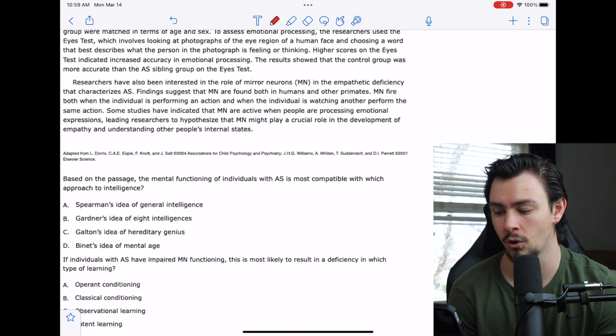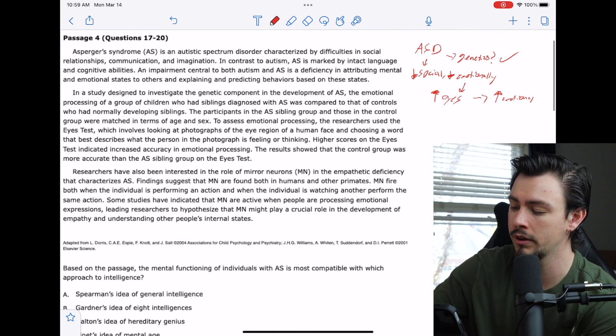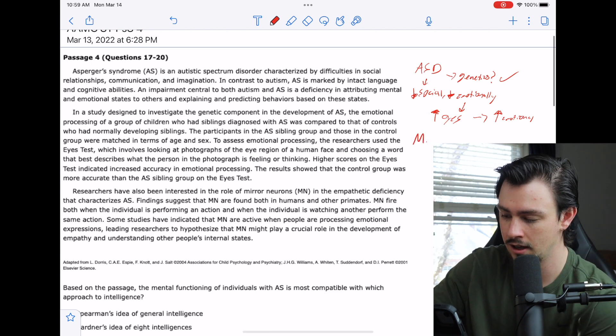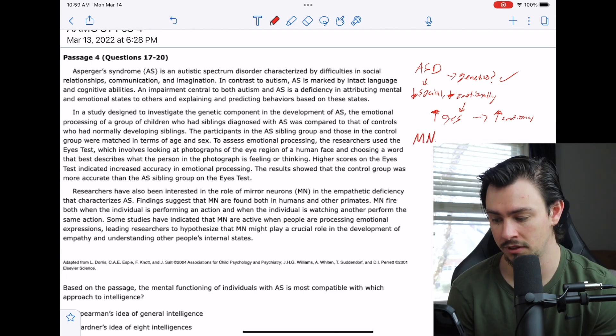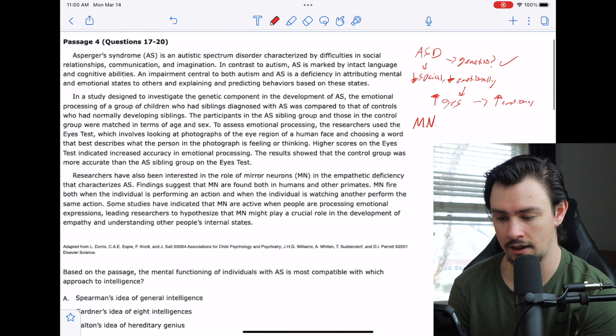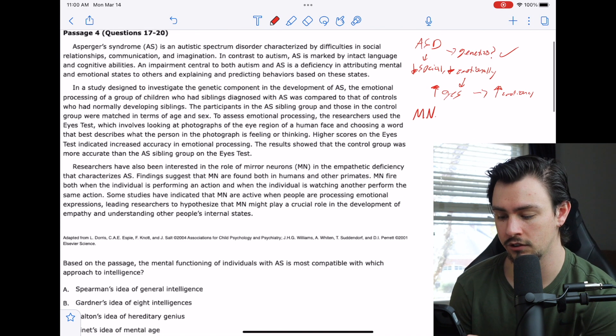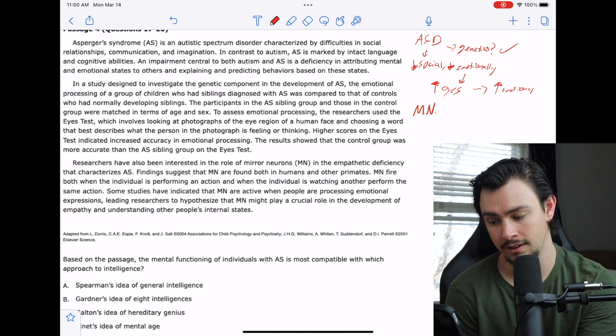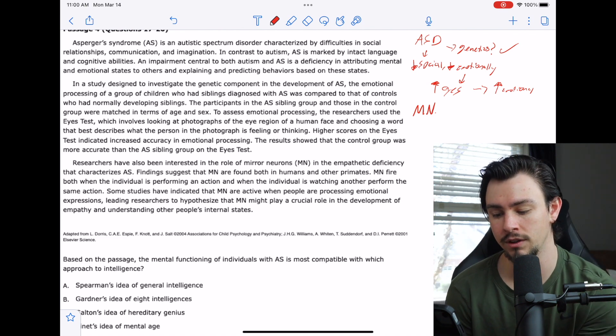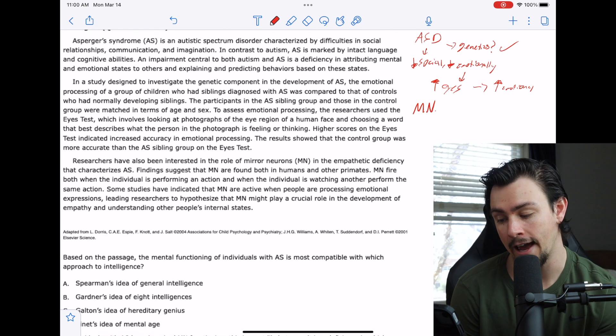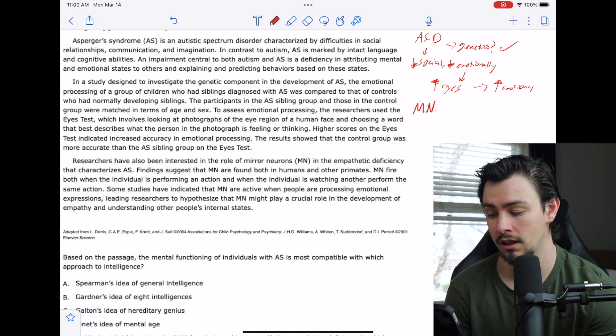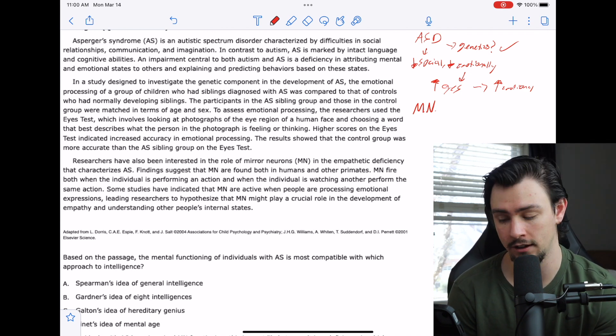Researchers have also been interested in the role of mirror neurons in the empathetic deficiency that characterizes Asperger's syndrome. Findings suggest that mirror neurons are found both in humans and other primates, and they fire both when the individual is performing an action and when the individual is watching another perform the same action.